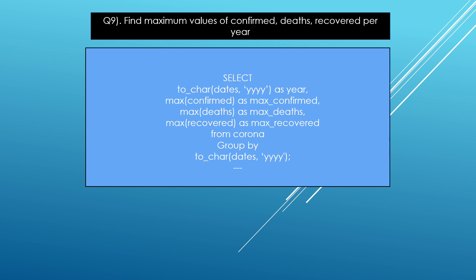The next question is: find the maximum values of confirmed, deaths, and recoveries per year. Basically I used GROUP BY and MAX functions — MAX(confirmed), MAX(dates), and MAX(recover). The grouping is per year, so I use YEAR(dates) as year.